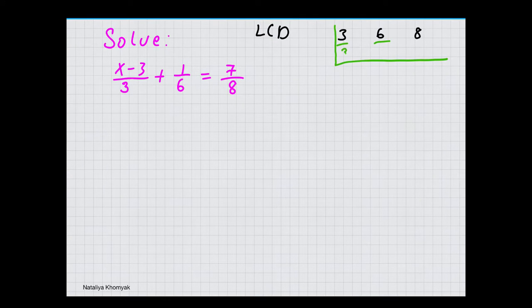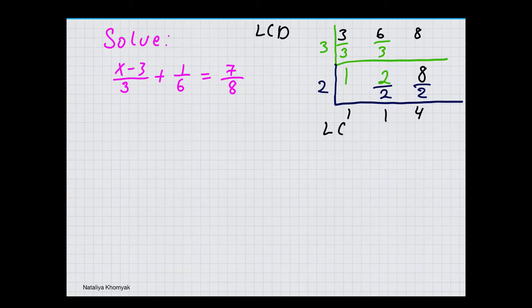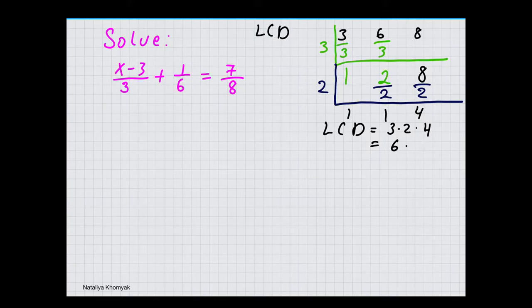3 and 6 can both be divided by 3. So 3 divided by 3 gives us 1, and 6 divided by 3 gives us 2. 8 remains the same. I still have 2 numbers that can be divided by something other than 1, so I am going to divide 2 and 8 by 2. 1 remains the same, 2 divided by 2 is 1, 8 divided by 2 is 4. So the least common denominator of 3, 6, and 8 is 3 times 2 times 4, which is 6 times 4, so our least common denominator is 24.